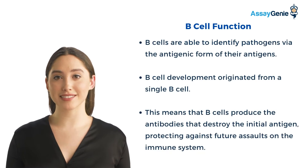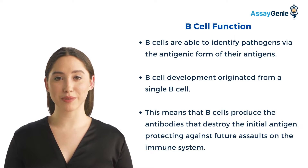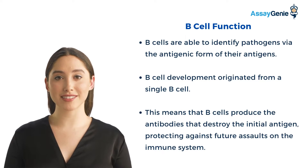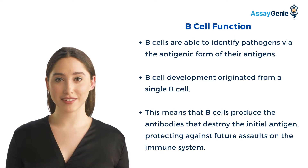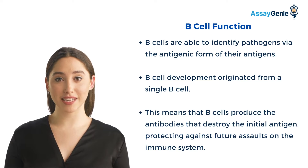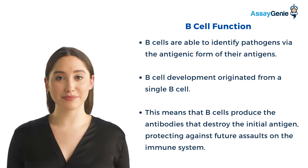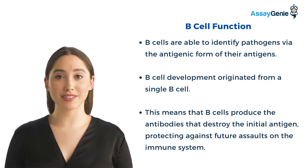B-cells are produced from stem cells in the bone marrow. They migrate to areas of infection where they carry out their effector functions. B-cells identify pathogens and produce antibodies to destroy the antigen. B-cell memory protects against future assaults on the immune system.